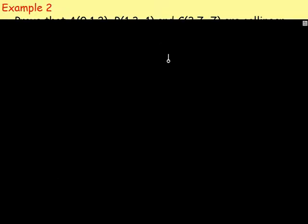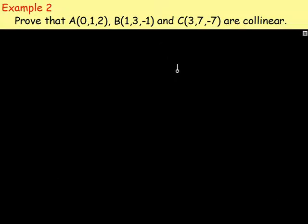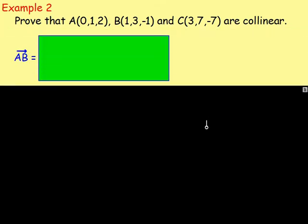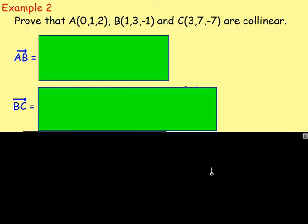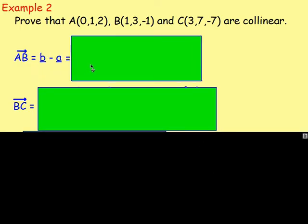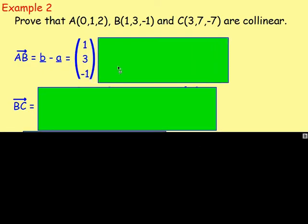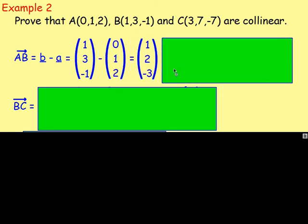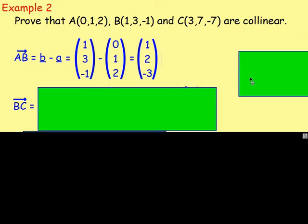Example 2: Prove that A, B and C are collinear. We need to start the same way — consider vectors AB and BC. Vector AB is B minus A, so we have (1, 3, -1) take away (0, 1, 2). If you work that out, you get (1, 2, -3). We cannot take out any common factor — that is your answer.